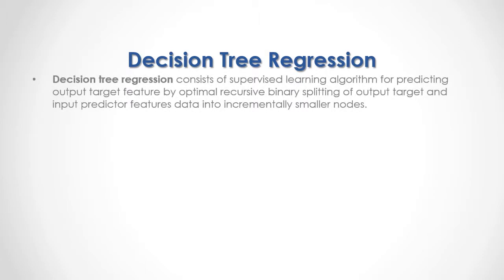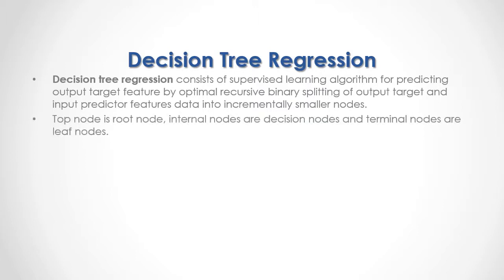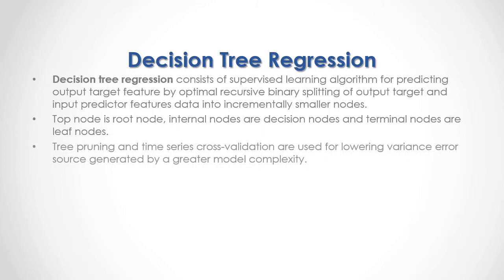Decision Tree Regression is a supervised learning algorithm for predicting an output target feature by optimal recursive binary splitting of output target and input predictor feature data into incrementally smaller nodes. The top node is the root node, internal nodes are decision nodes, and terminal nodes are leaf nodes. Tree pruning and time series cross-validation are used for lower variance error search generated by greater model complexity.